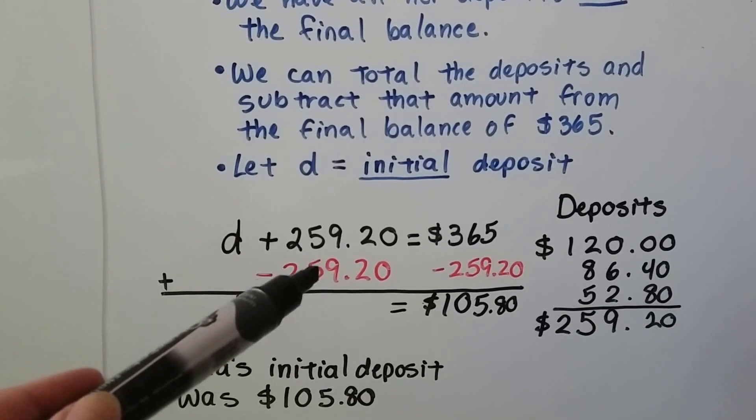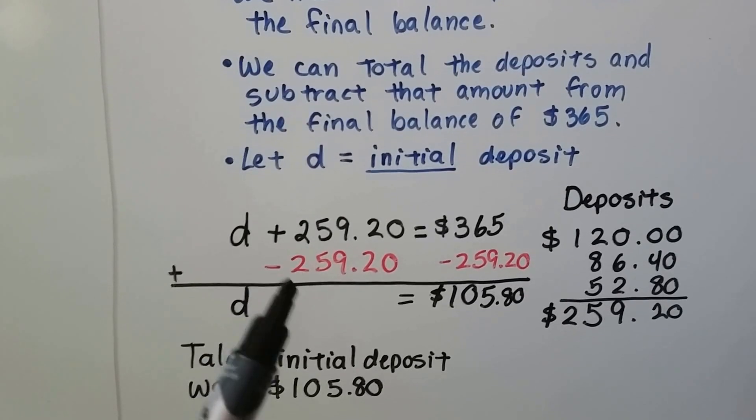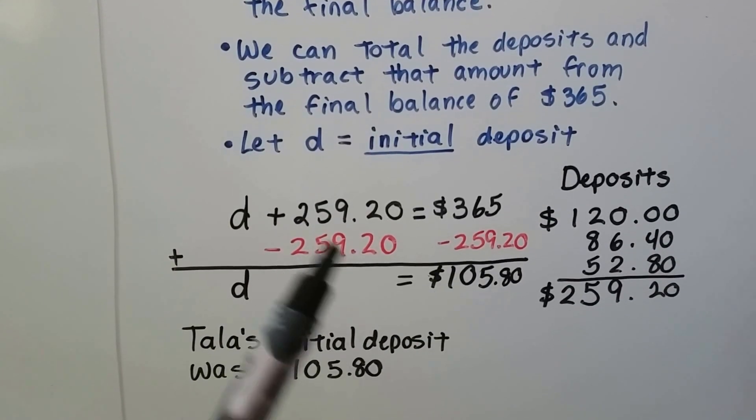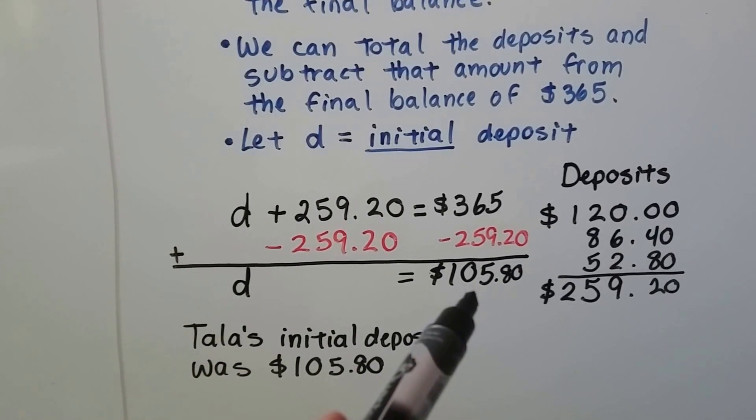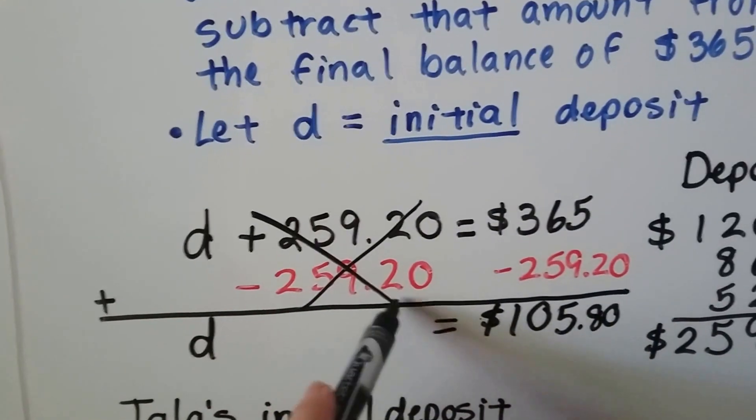And then she deposited this $259.20, right? So, we're going to take $259.20 away from each side of the equation. And that's going to give us $105.80 on this side, and D on this side, because we eliminated this.